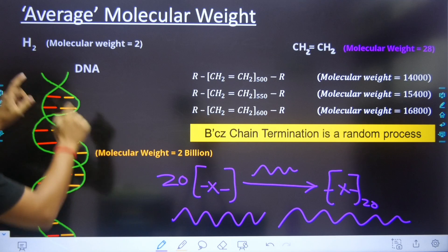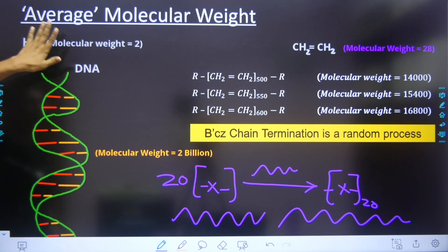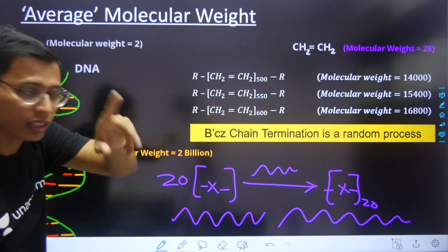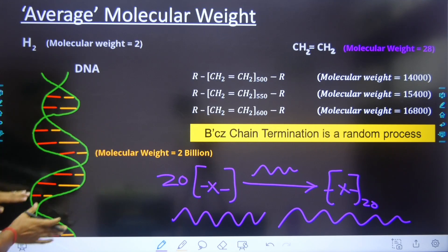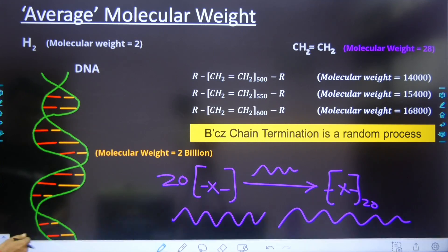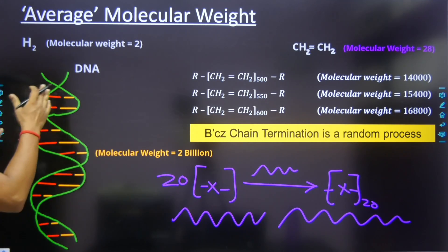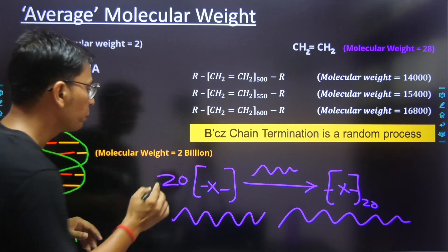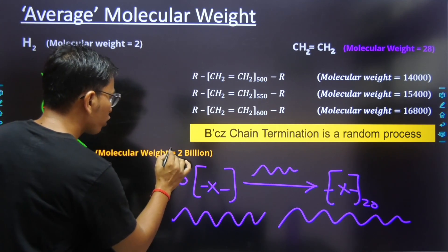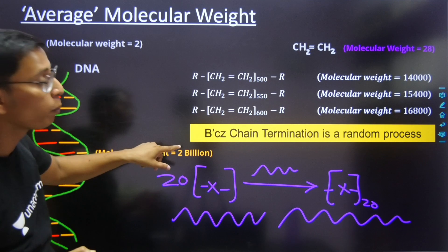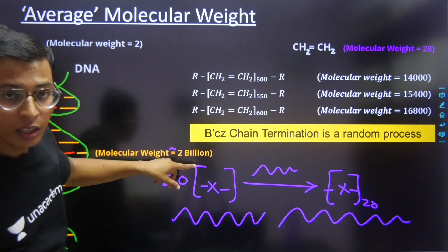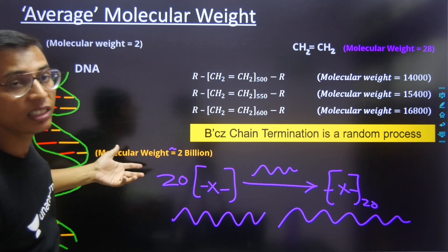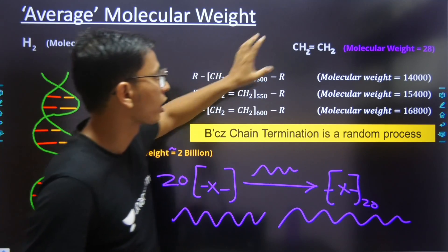For a simple molecule like hydrogen, the molecular weight is approximately 2. But for polymer chains, the approximate molecular weight can be 2 billion. So we cannot use the same approach as simple molecules — the molecular weight of a polymer is not a single fixed value.